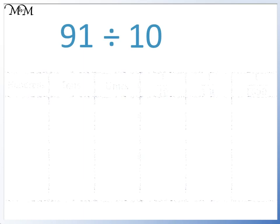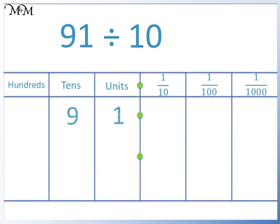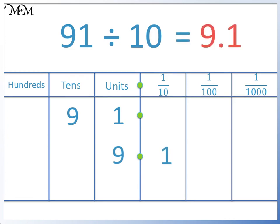91 divided by 10. To divide by 10, we move each digit one place to the right. It's best to move one digit at a time to avoid making any mistakes. We'll start with the 9 — it moves from the tens column to the units column. Now for the 1 — it moves from the units column to the tenths column. The number that we have is 9.1. So 91 divided by 10 equals 9.1.